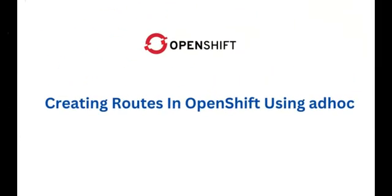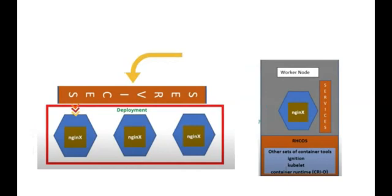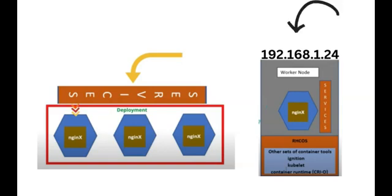Hi everyone, Victor here again. In today's lesson we will learn about one of the OpenShift resources called Route and how to create it. In our previous lesson we learned how to create a service in OpenShift — both internal and external services — and one of the external services we created is the NodePort. We were able to access our application externally by using the node IP address of where the application was running.